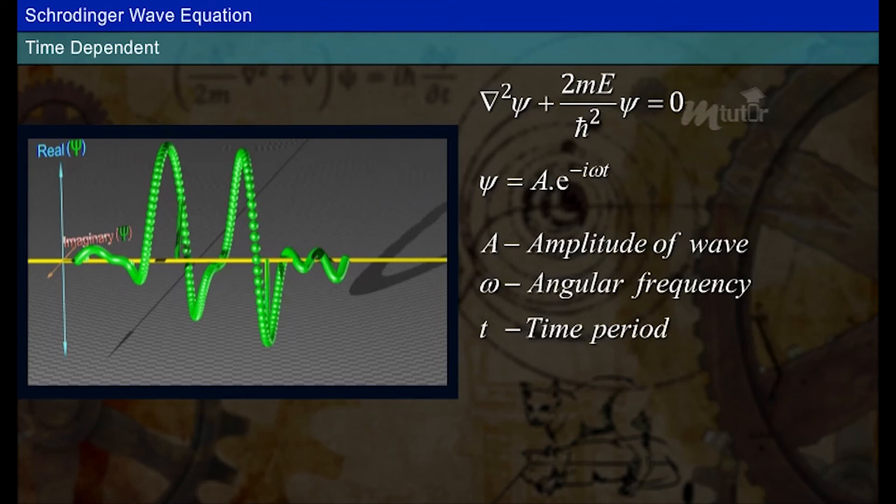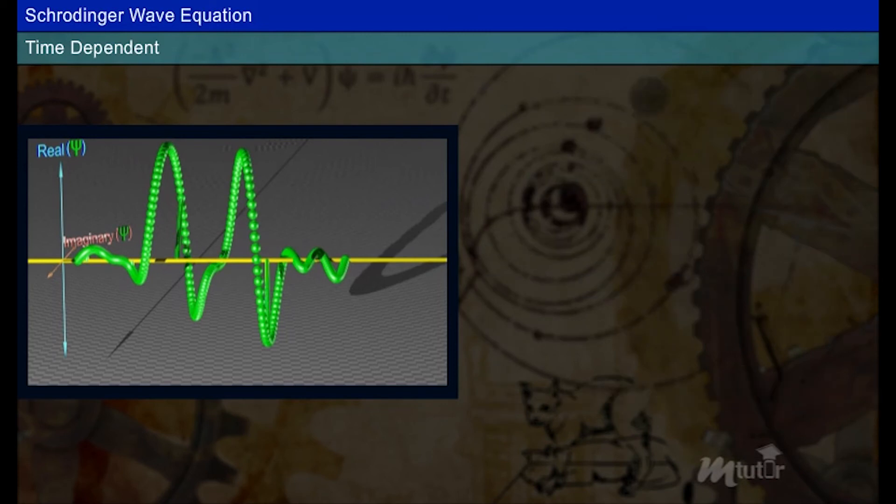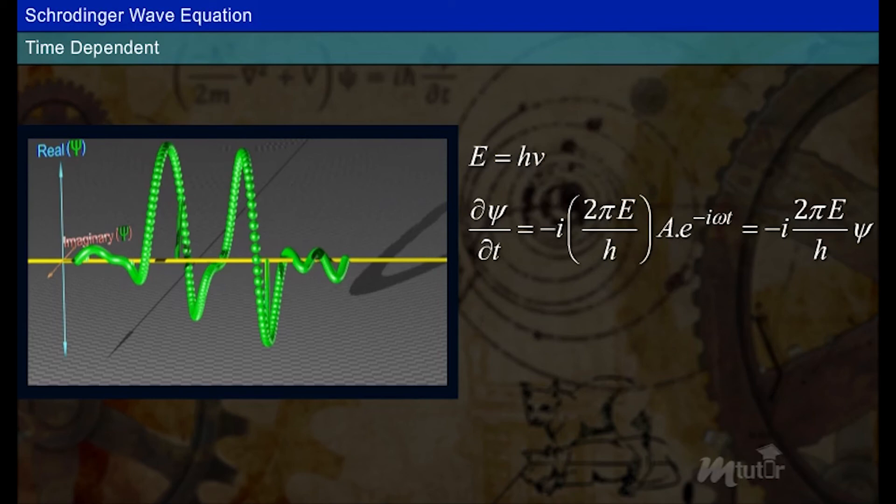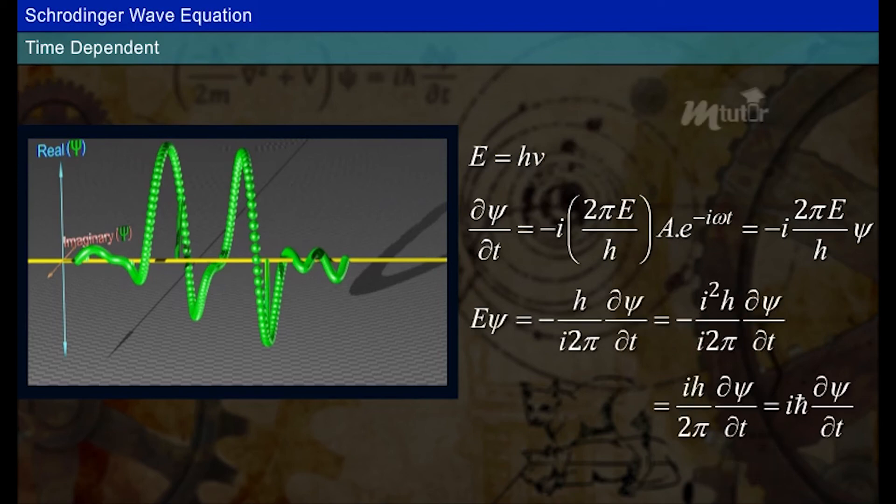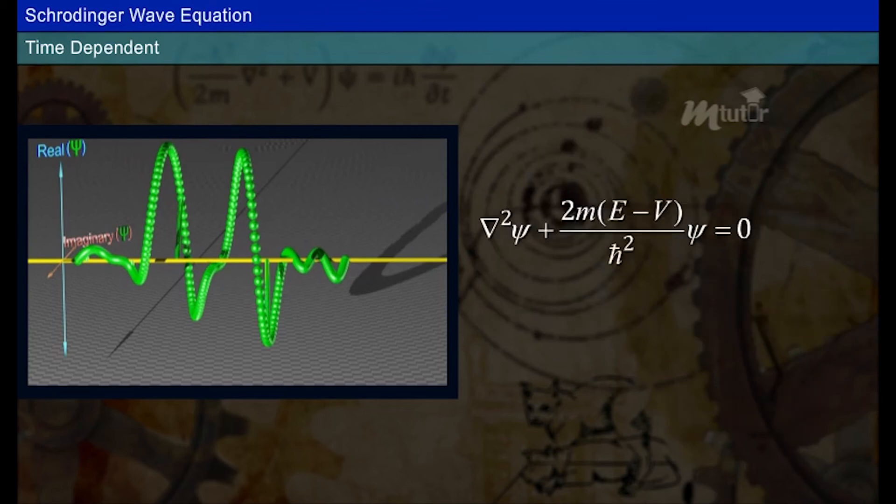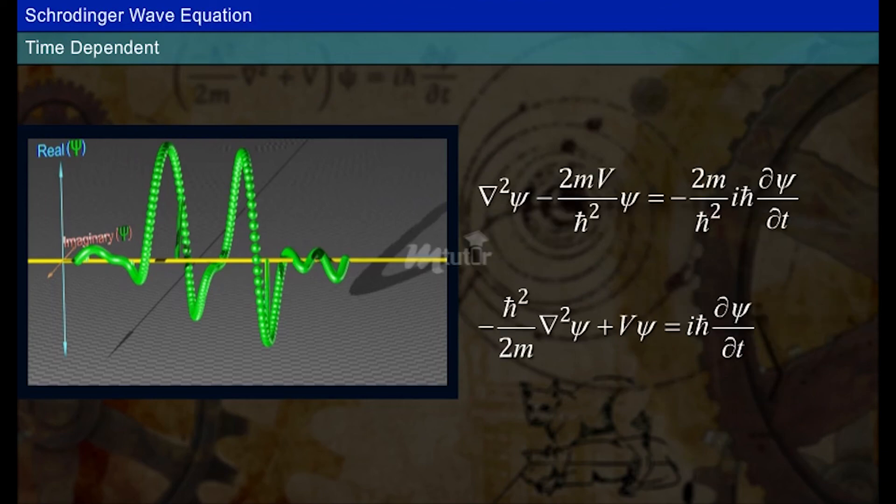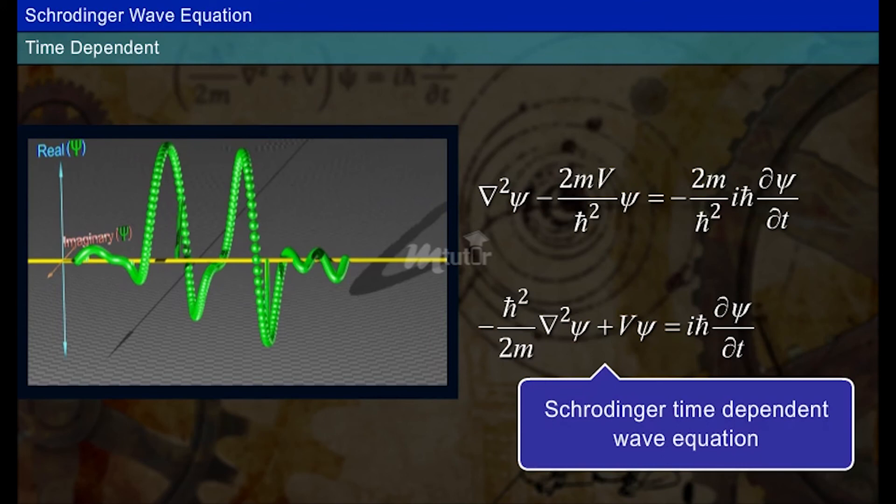Differentiating the above equation with respect to t, we get d psi by dt equals minus i into 2 pi nu A into e to the power minus i omega t. We know that E is equal to h nu. Apply the above statement in above equation and the change is as given. Hence, Schrödinger wave equation can be written as shown. Simplifying the above equation, we get Schrödinger time-dependent wave equation.